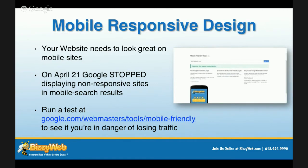As of April 21st of this year, Google stopped displaying non-responsive sites in mobile search results. That means if someone searches for your keywords — for example, if you're a financial services company and someone searches for 'home loans' — your website won't show up in that search if it's not mobile responsive. Google is only going to display websites that look good on mobile devices. Up to 80% of searches right now are happening initially on mobile devices.